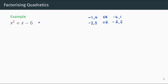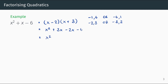Negative two plus three gives us one, so x squared plus x minus six factorizes to x minus two multiplied by x plus three. Checking by expanding: x times x is x squared, x times three is plus three x, negative two times x is negative two x, and negative two times three is negative six. This simplifies to x squared plus one x minus six, confirming our answer.